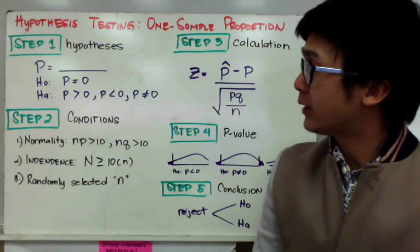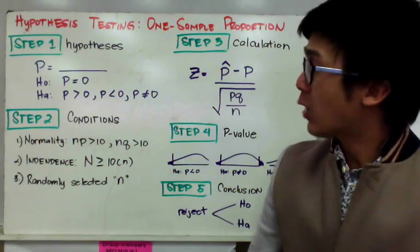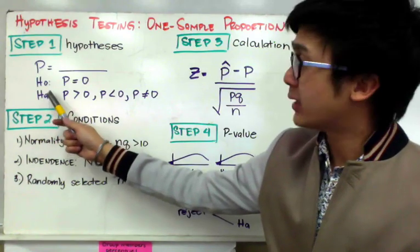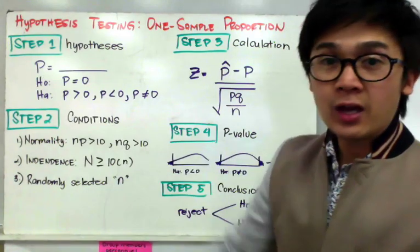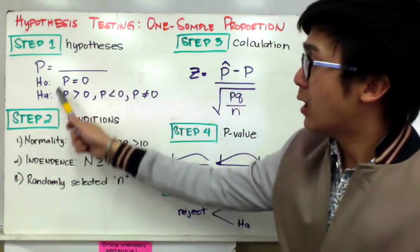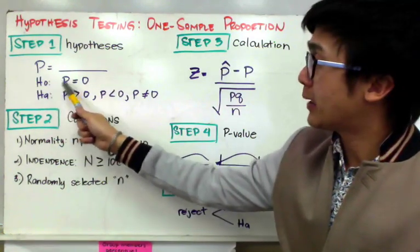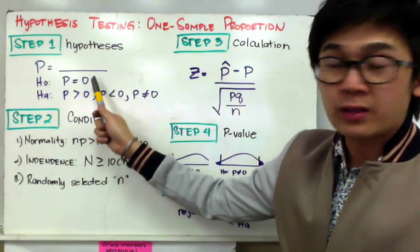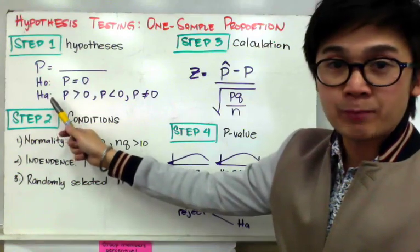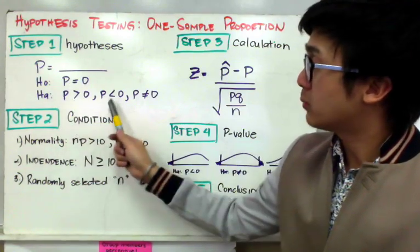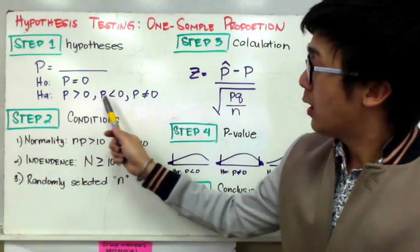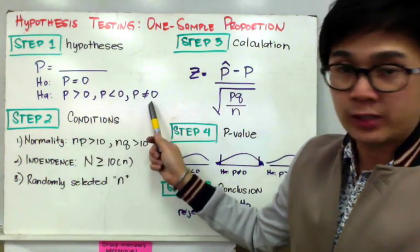For our first step, we need to write our hypotheses — our null and alternative hypothesis — and make sure to define the parameter you are measuring. Our null hypothesis will be p equal to zero, and the null hypothesis will always use an equal sign. For our alternative hypothesis, we have three possible options: p greater than zero, p less than zero, or p not equal to zero.